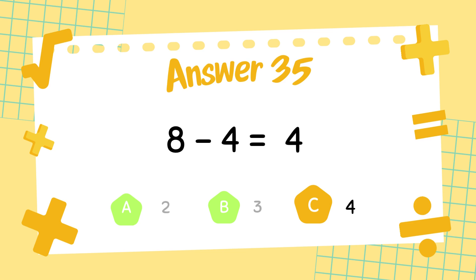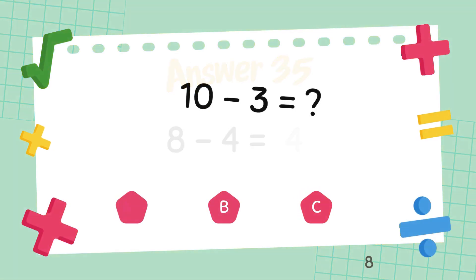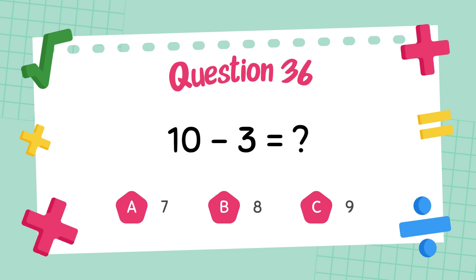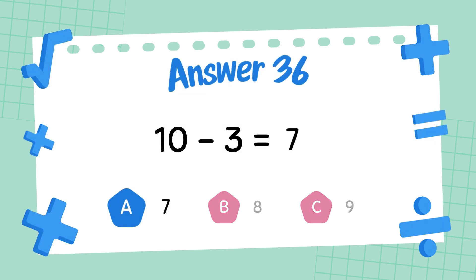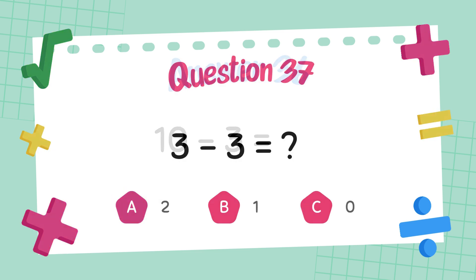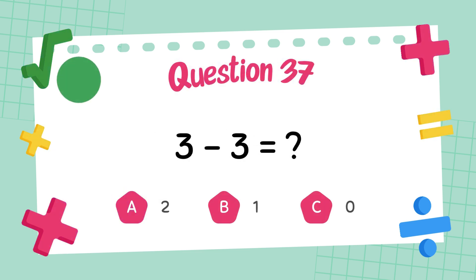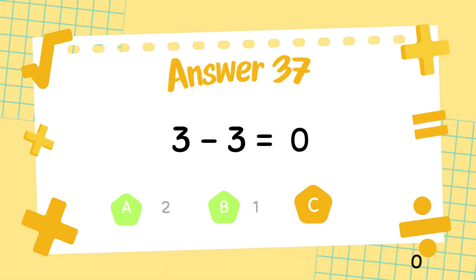The answer is 4. What is 10 minus 3? The answer is 7. What is 3 minus 3? The answer is 0.